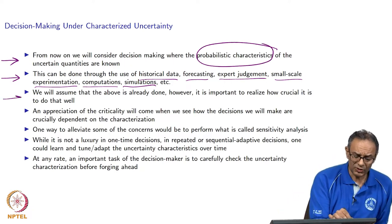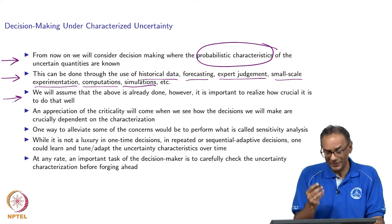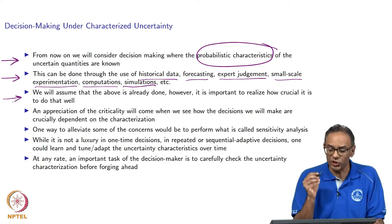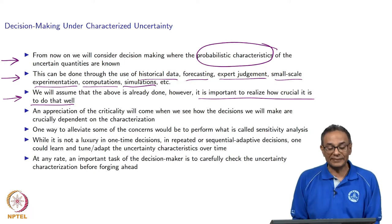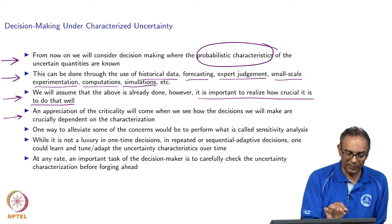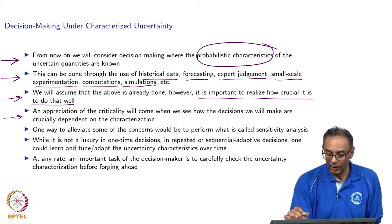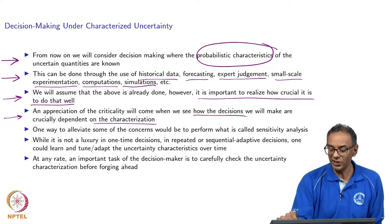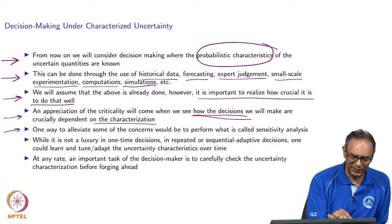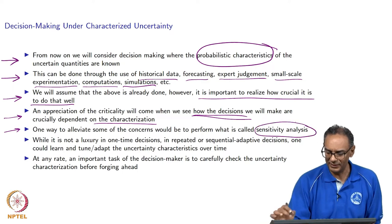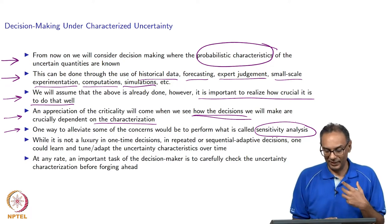For the rest of this course, we will always assume that someone has done that hard work and given us some type of probabilistic characteristics. It is important that we do the characterization extremely well, because a lot of our results and decisions are going to critically depend on how these probabilities are characterized. One could also do some sensitivity analysis — perturb the numbers a little bit and see if different decisions result.